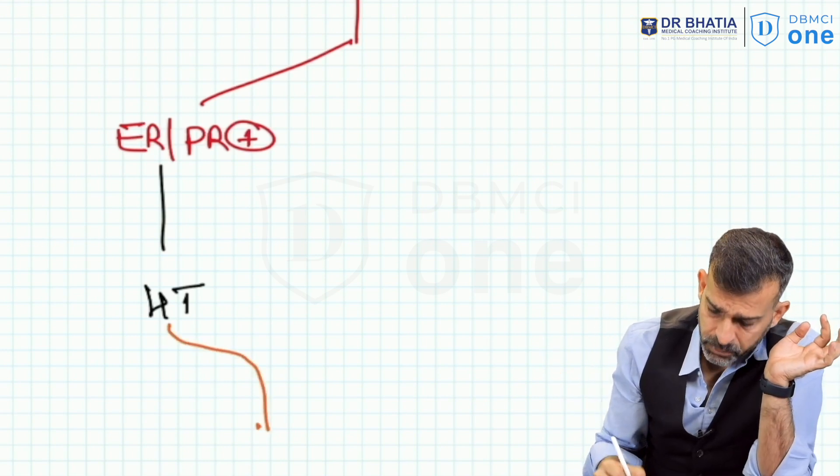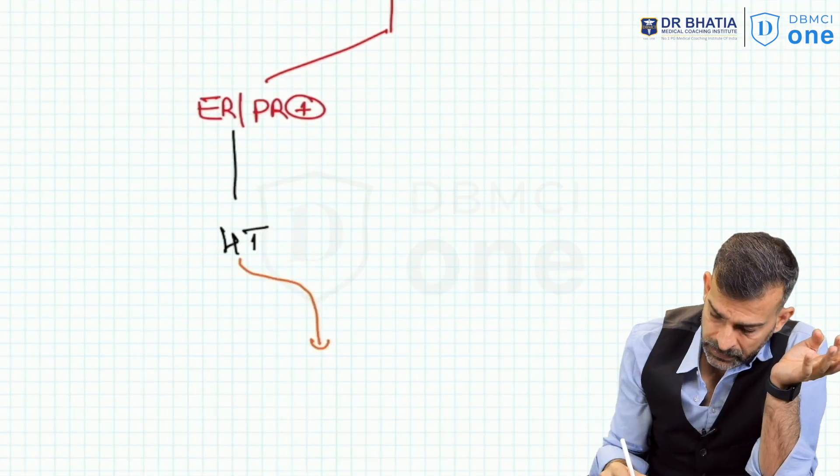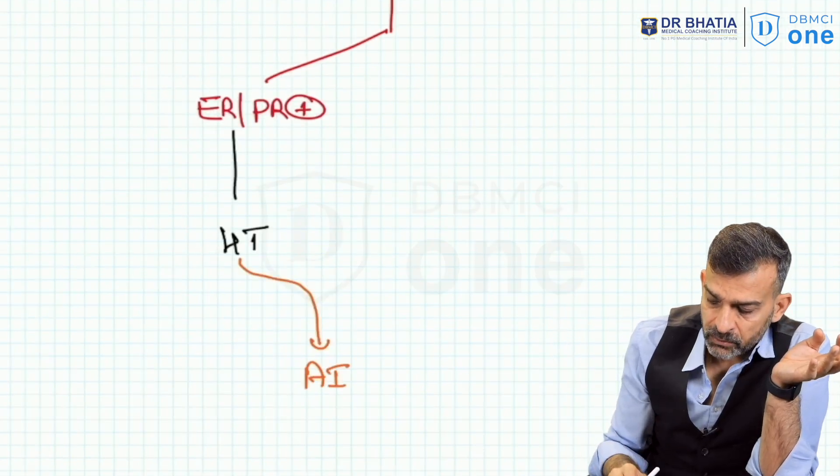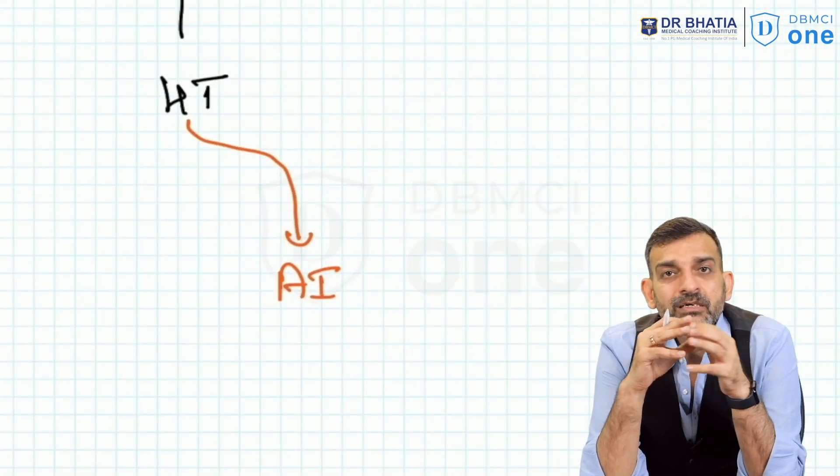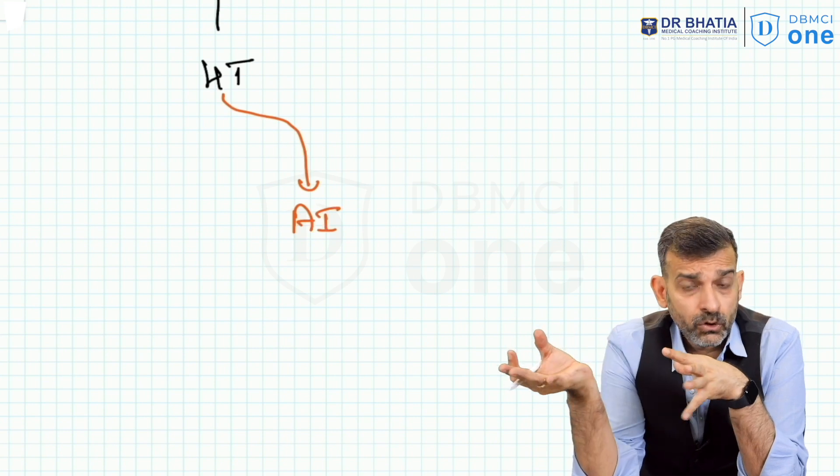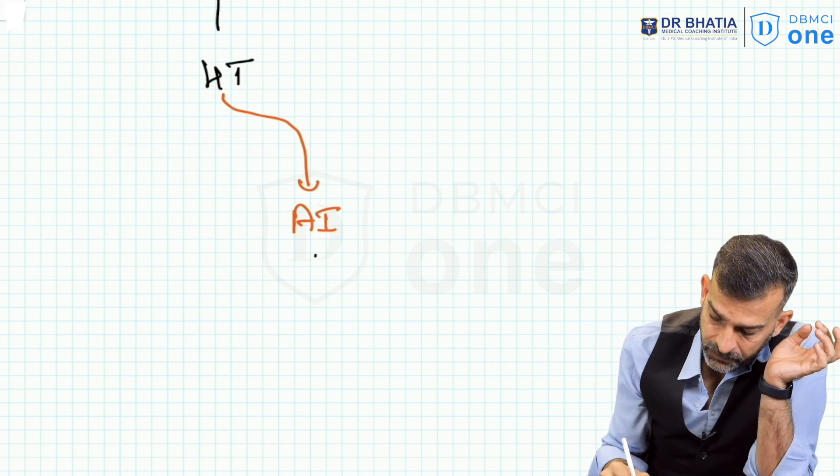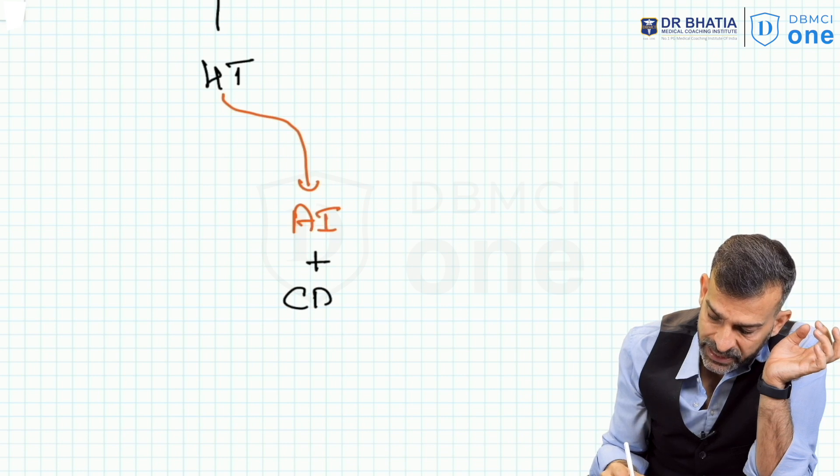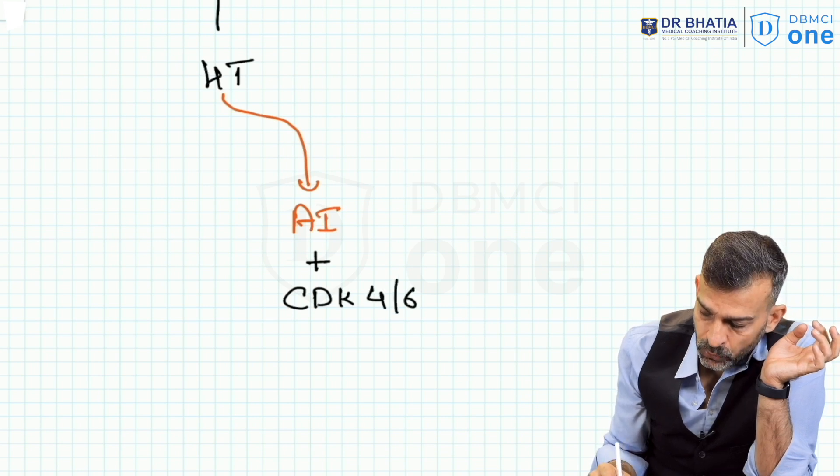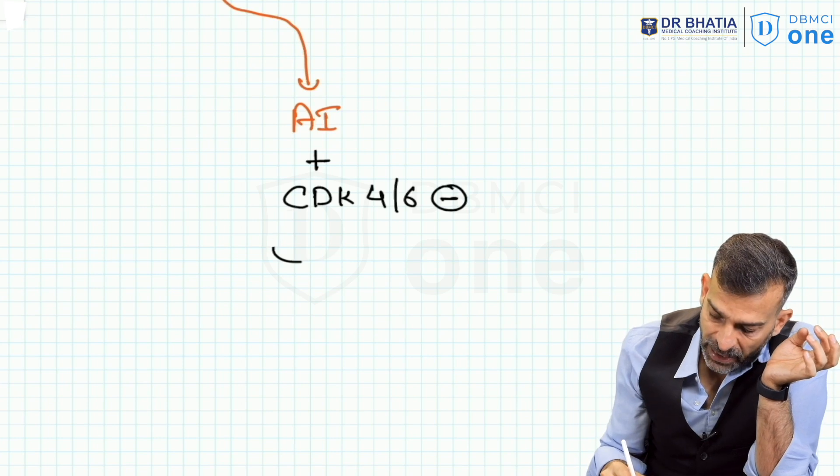The guideline says if in hormone therapy because of some reason you are giving an aromatase inhibitor, then only if for some reason you are giving aromatase inhibitor that is letrozole, you should be adding CDK4/6 inhibitor also in this, and that is palbociclib.